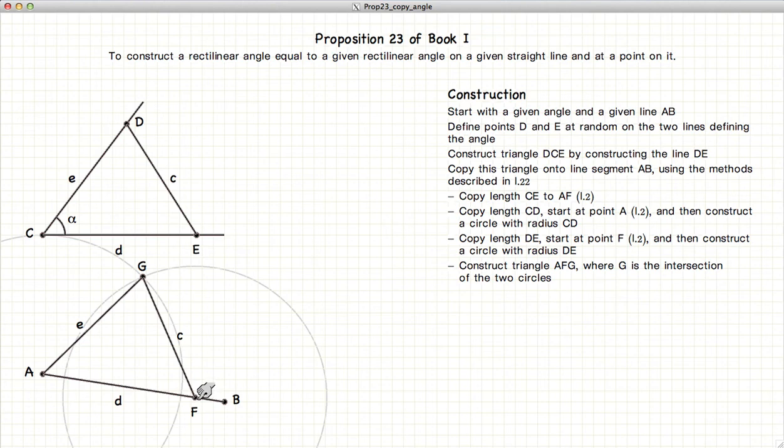These two triangles are equal because we have the side is equal to the side, the side is equal to the side, and so forth. And thus we have the angle at C is also equal to the angle at A.